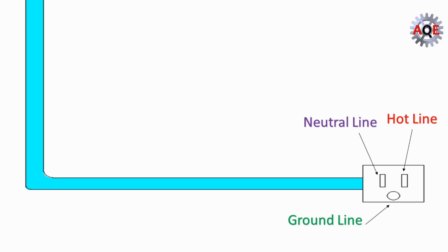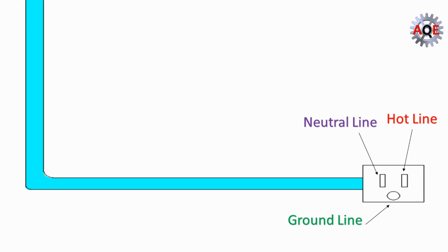To tell if your home has ground wire, check your outlets. If your outlets have three prongs, then your home has ground wire. If there are only two prongs, then ground wire may not be utilized.